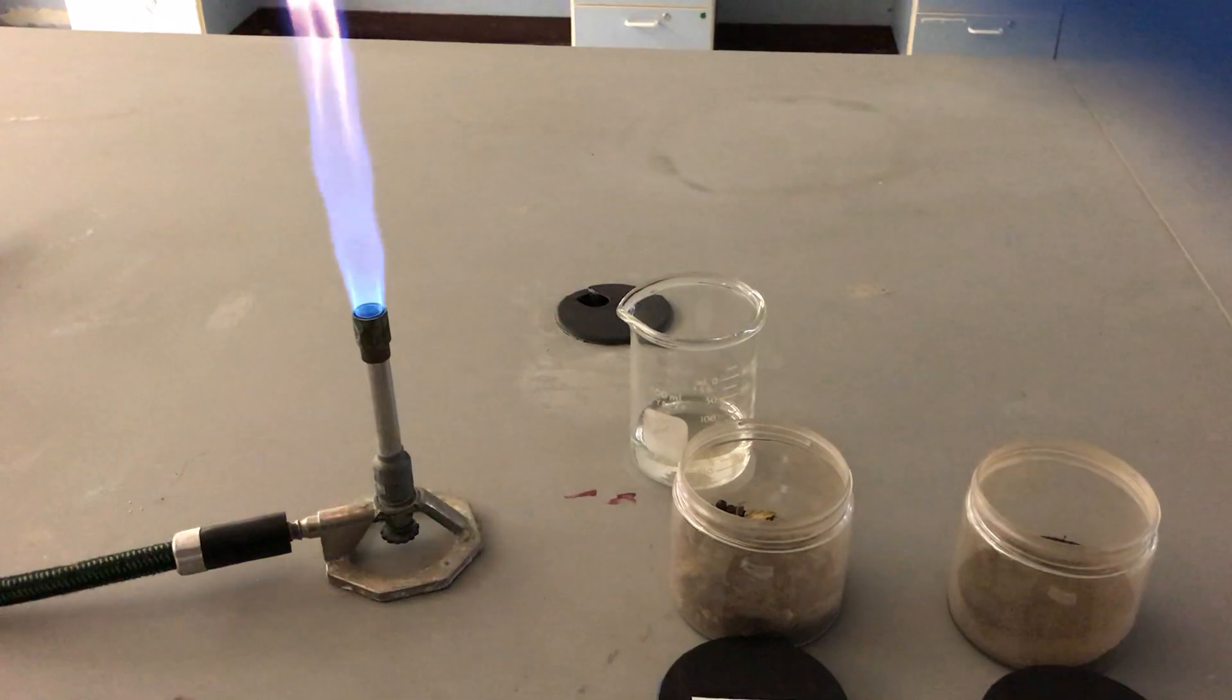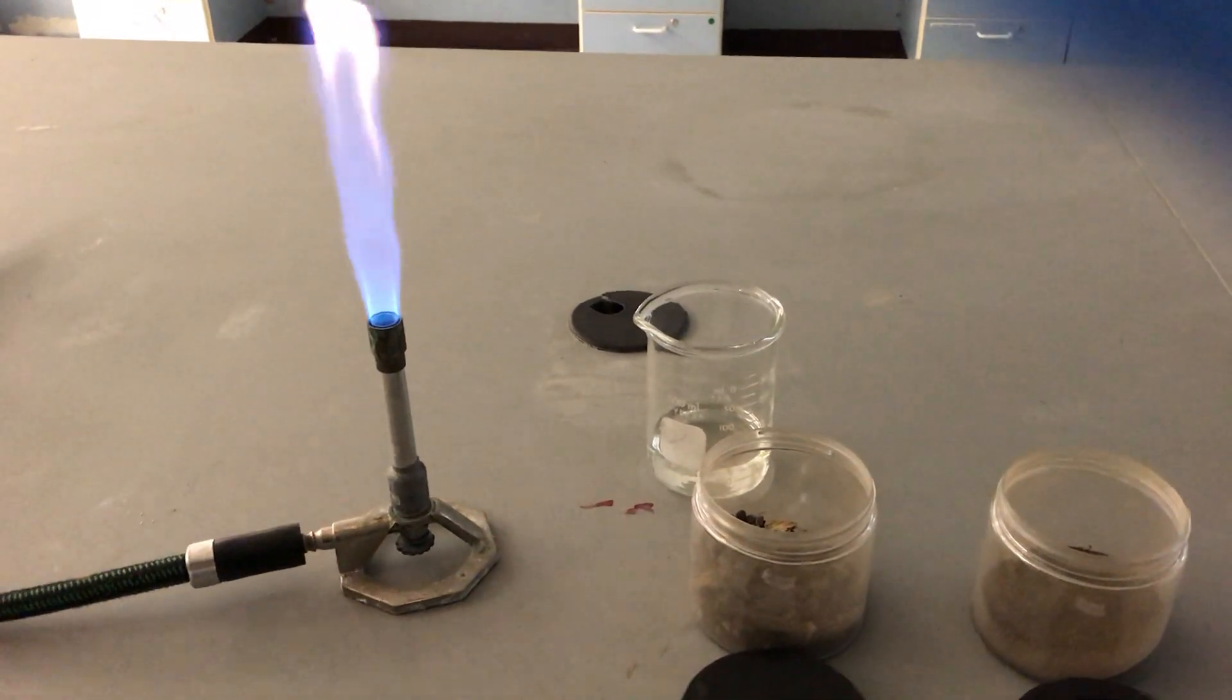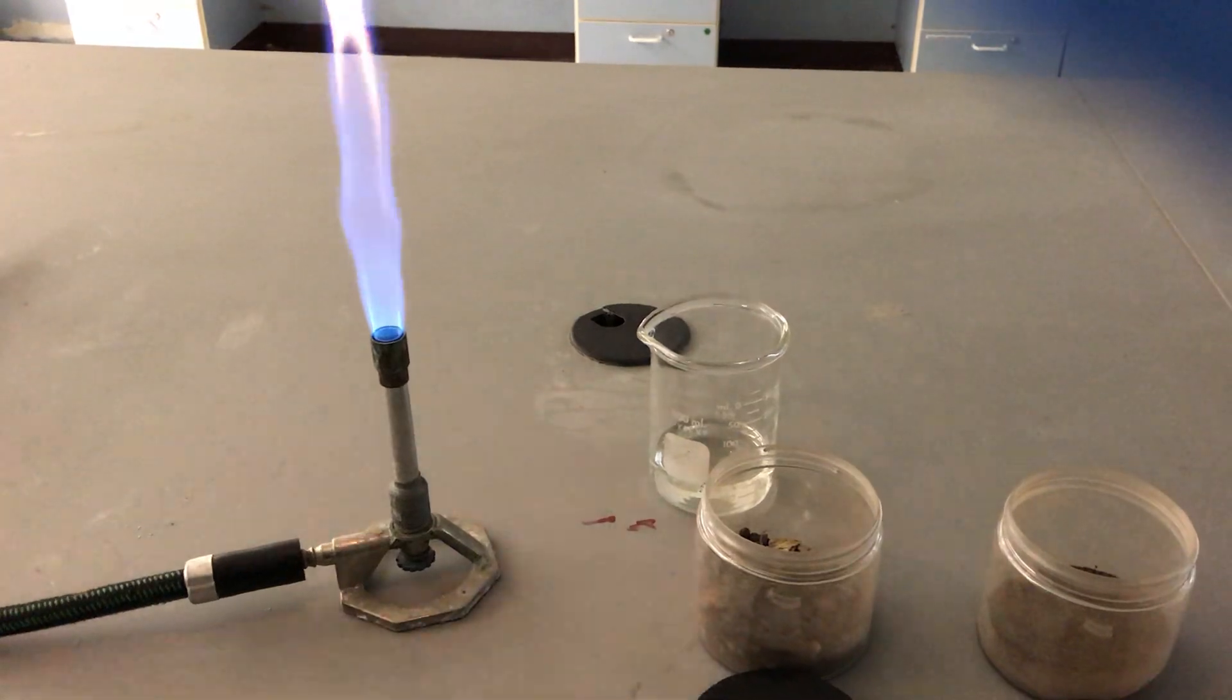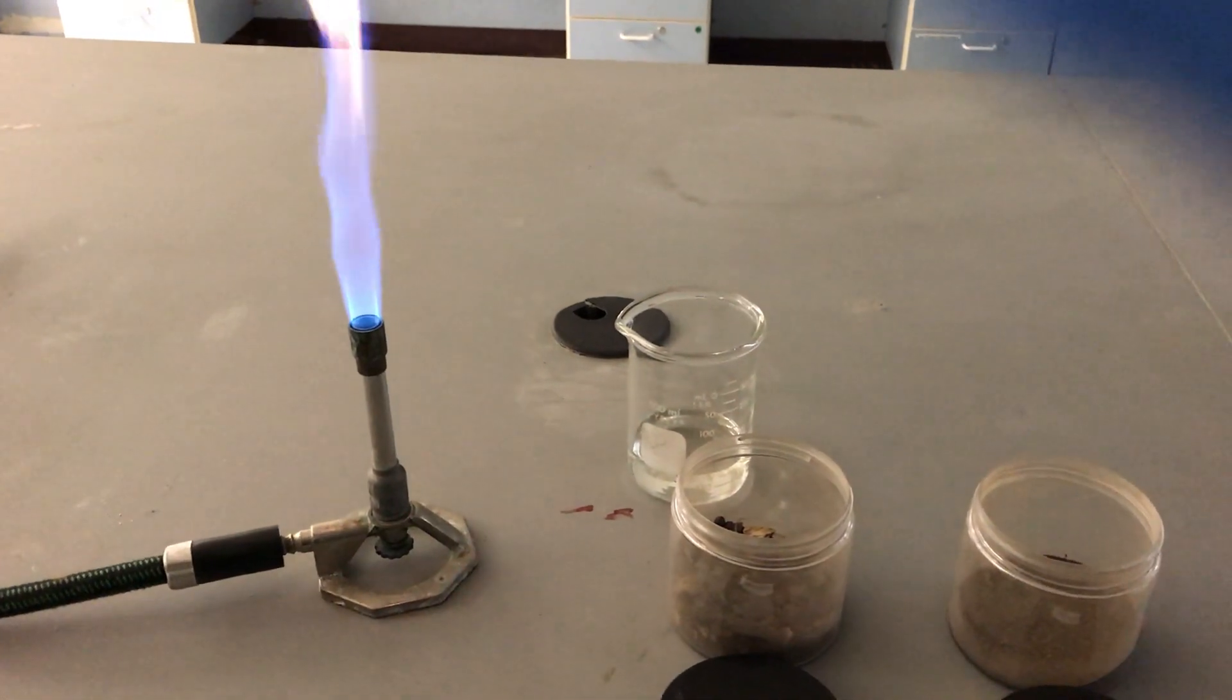So for example if we see orange we might say there's calcium present, or if it's yellow it's sodium. Green would indicate copper or barium, red, lithium or strontium, white, magnesium.